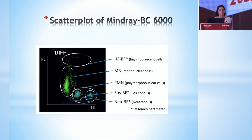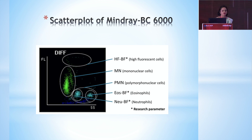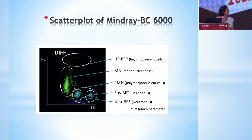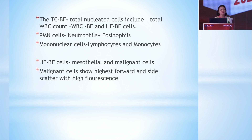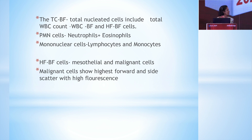This is the diff scatter plot in the body fluid mode given by the analyzer, where we can see the HFBF — the high fluorescent body fluid cells — in the uppermost area with highest lateral fluorescence and low side scatter. We also see mononuclear cells and polymorphonuclear cells comprising eosinophils and neutrophils. The total count TCBF generated by Mindray BC6200 includes total nucleated cells: WBCs, HFBF (high fluorescent cells), polymorphonuclear cells (neutrophils and eosinophils), and mononuclear cells (lymphocytes and monocytes). The HFBF cells are comprised of both mesothelial cells and malignant cells.